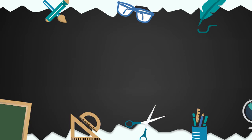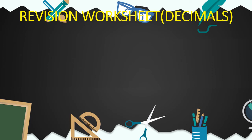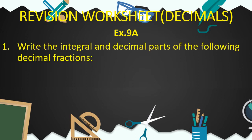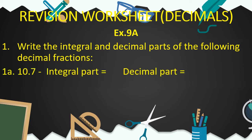Children, let's begin this revision worksheet of exercise 9A. We begin with the first question: write the integral and decimal parts of the following decimal fractions. For part A, we have the decimal fraction 10.7. The integral part is 10, and the decimal part is 0.7.